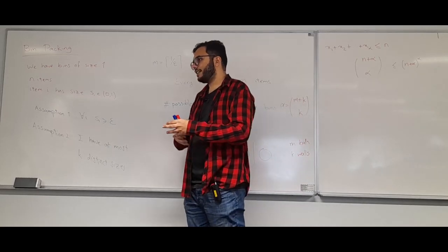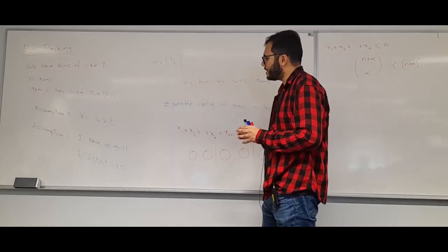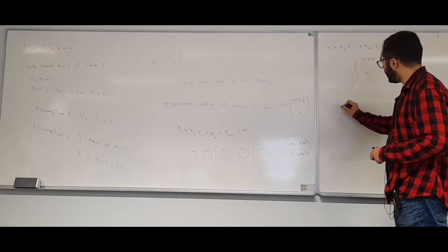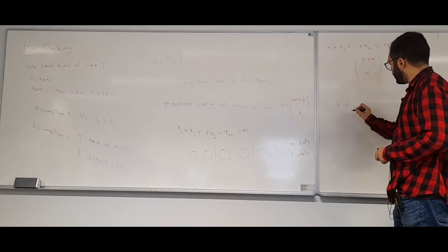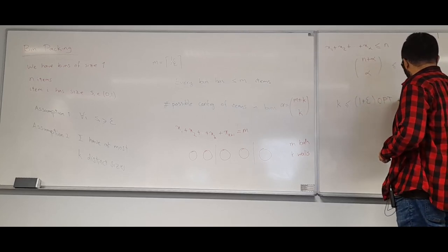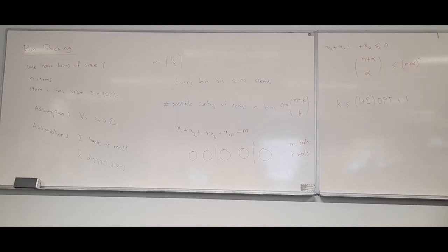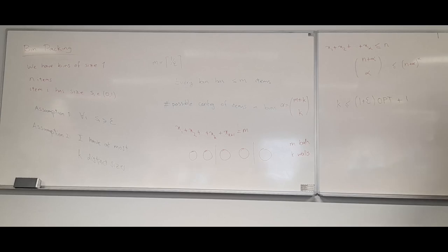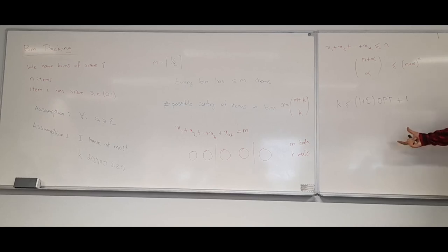In the next session, we'll remove the second assumption first to get some approximation ratio, then remove the first assumption to get a slightly worse ratio. The remarkable result at the end is an algorithm achieving K ≤ (1+ε)·OPT + 1. This is striking because we know we cannot beat 3/2·OPT in general, yet (1+ε)·OPT + 1 comes very close — the +1 does heavy lifting, especially since the hardness case is when OPT = 2. We'll see that algorithm next time.